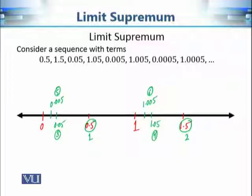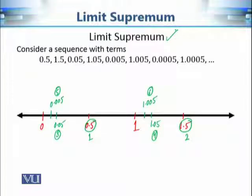Since the terms are oscillating between 0 and 1, it is clear that this sequence is not going to converge to one fixed number — the sequence is divergent. So we cannot calculate the limit in this case. But what we can do is calculate the limit supremum, or LIMSUP, of this sequence. Even if the sequence is divergent, we can always calculate the LIMSUP, and that's why we use this concept to define the root test.